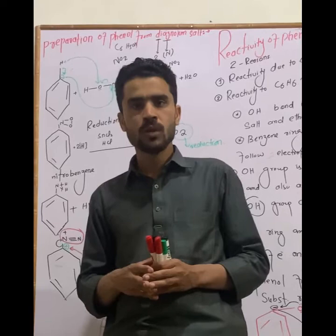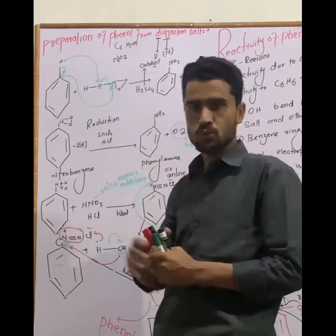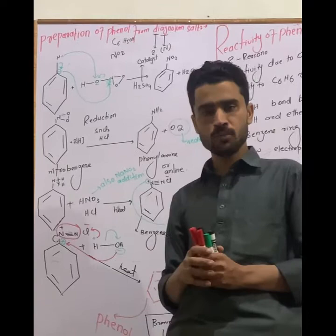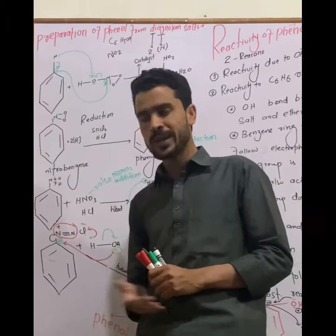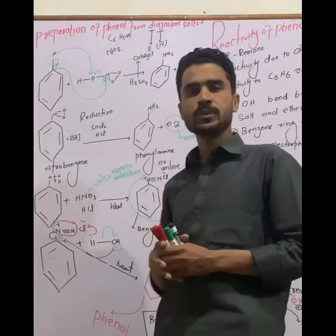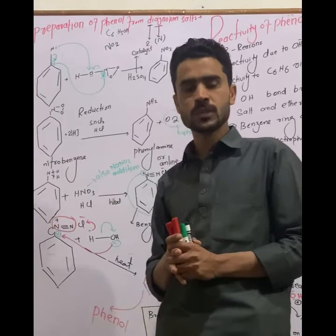We used to measure the preparation of phenol from diazonium salt. The phenol is removed from the benzene ring, and hydrogen is removed from the OH group. So the phenol is removed from the diazonium salt, which is made by nitrogen. The diazonium salt's other side is also removed from the nitrogen.